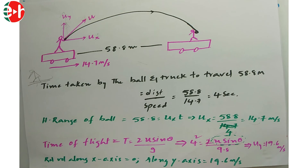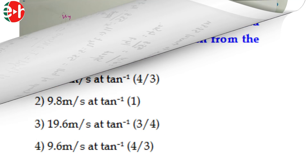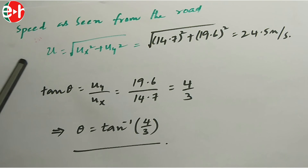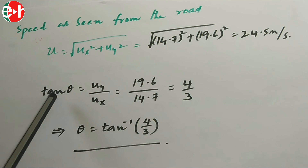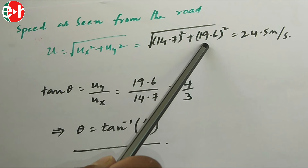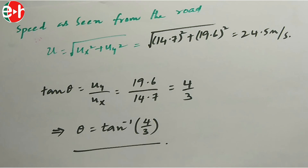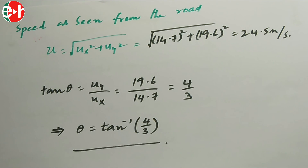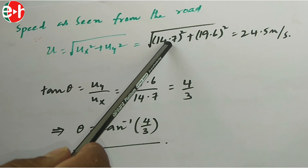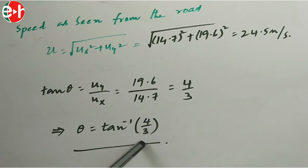For an observer on the ground, the ball has both horizontal and vertical components. The resultant velocity = √(Ux² + Uy²) = √(14.7² + 19.6²). The angle of projection: tan θ = Uy/Ux = 19.6/14.7 = 4/3, so θ = tan⁻¹(4/3).